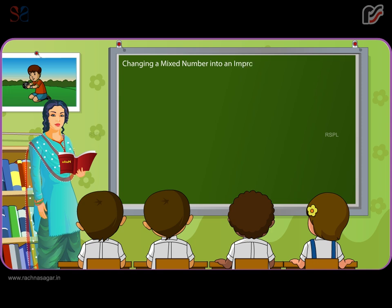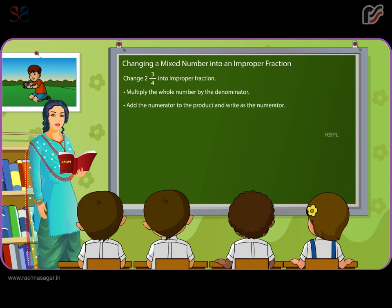Changing a mixed number into an improper fraction. Change 2 and 3 by 4 into an improper fraction. Multiply the whole number by the denominator, add the numerator to the product, and write that as the new numerator. Write the denominator as it is. So the answer will be 11 by 4.